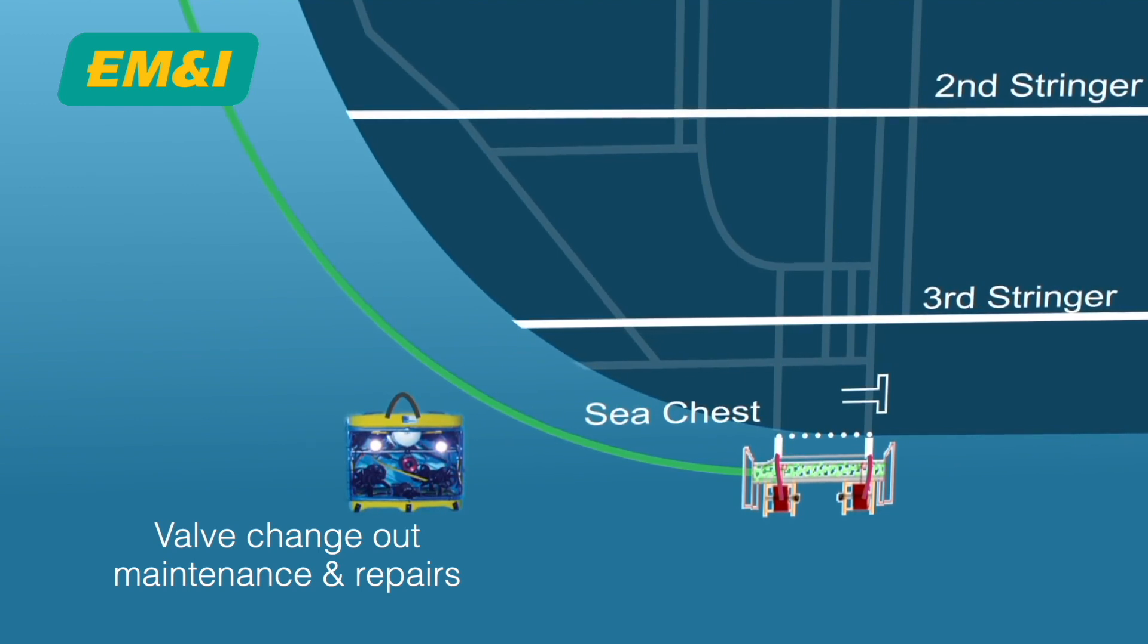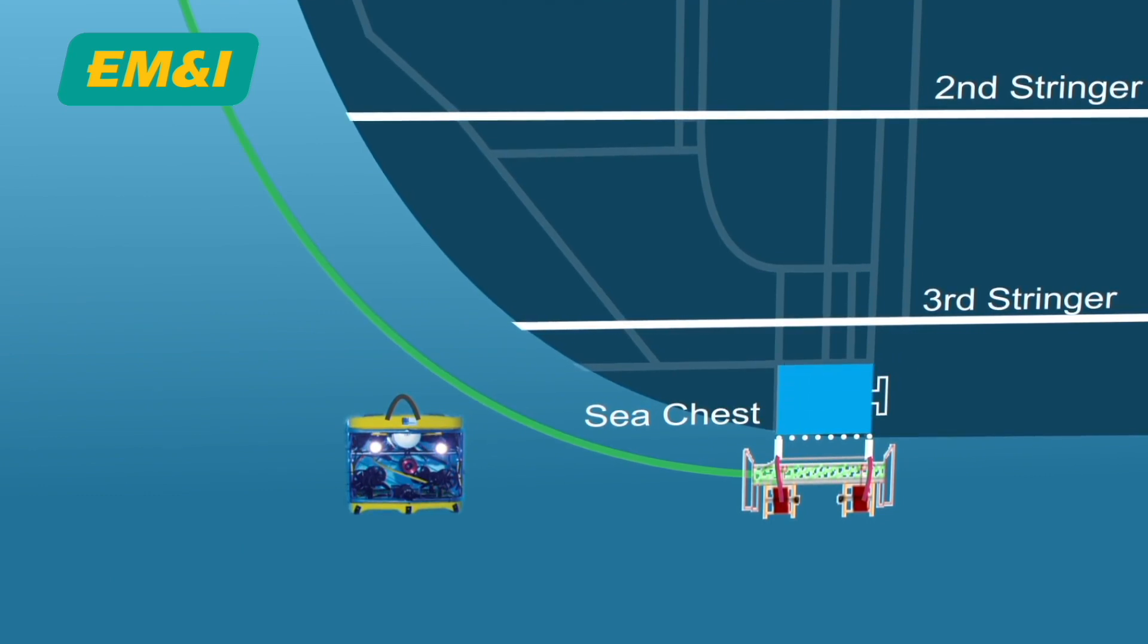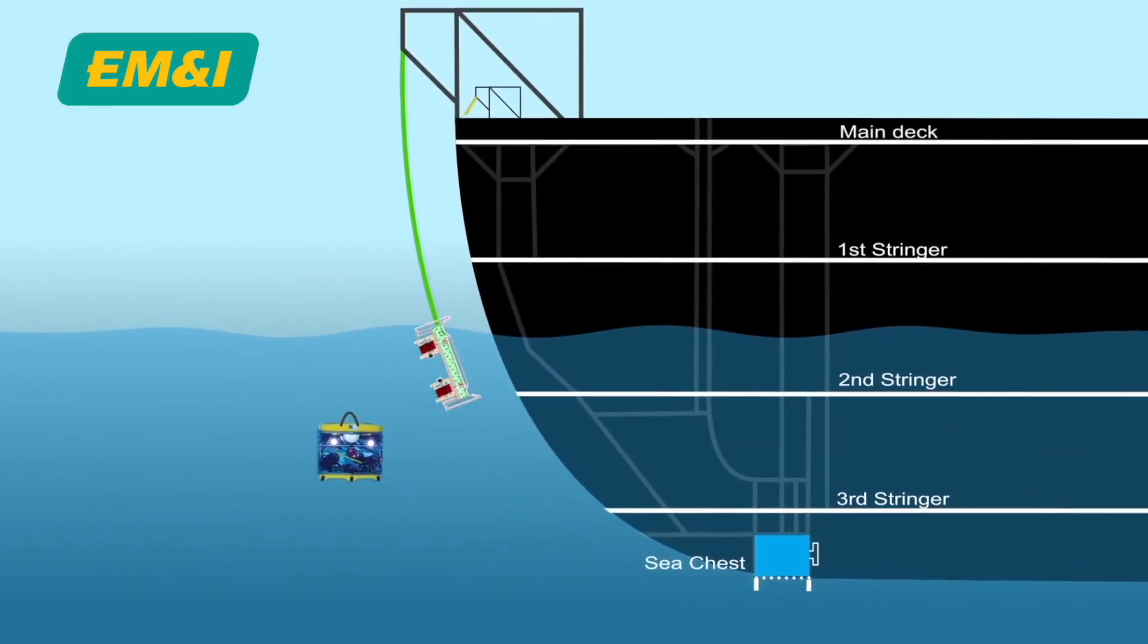After successful change out of the valves, the sea chest is then flooded. And once the sea chest integrity is confirmed, the isolation blank can be removed back to the main deck using the quick release system to ensure no equipment remains at the sea chest inlet.